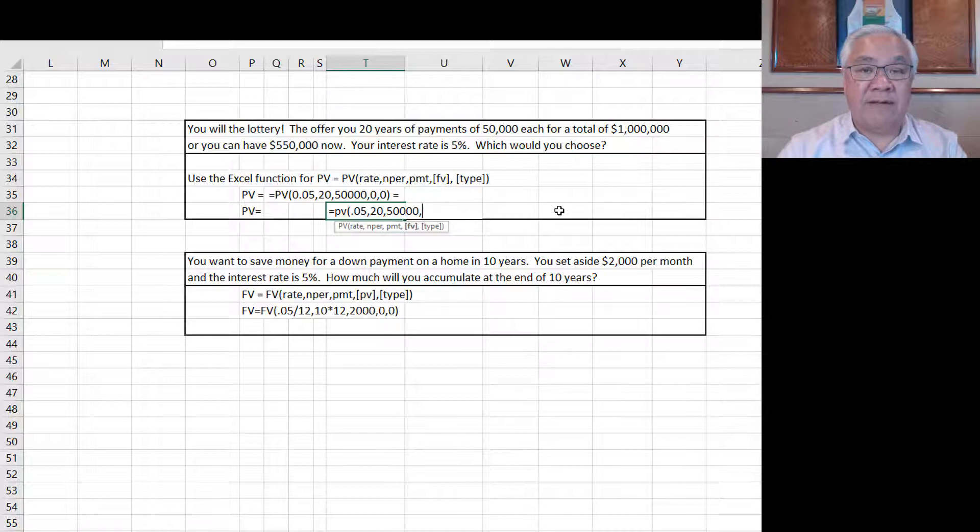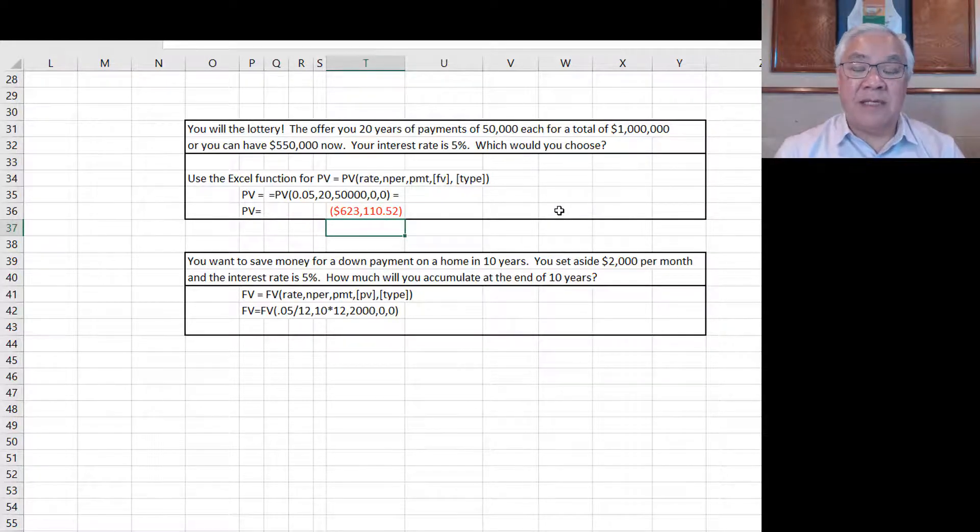Then a comma. The payments are $50,000 per year. And then the future value is zero because at the end of the payment of those 20 years, you get no more. Sorry, that's it. And then you can accept the default, which simply means end of period and close parens and enter. And that is worth $623,110. All right. So we'll look at them together in a moment.